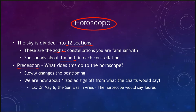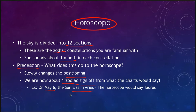We have also talked about precession. Precession is slowly changing the position of the Earth's celestial poles, changing the coordinate systems and the positioning we see. Since the time of Ptolemy, this has moved us about one zodiac sign off from what the charts would say. For example, if you look up May 6th, that would normally consider someone a Taurus, but the Sun on that day would actually be in the constellation of Aries. Our astrology is still based on the original horoscopes, so if you're born on May 6th you're considered a Taurus, but the Sun was truly in Aries when you were born.